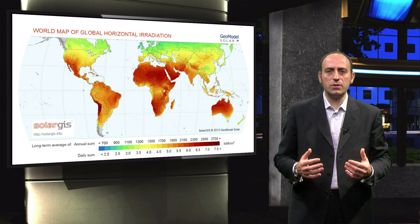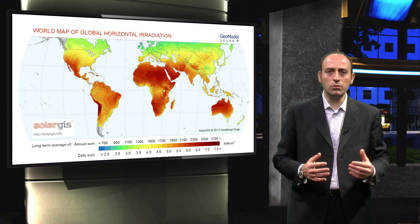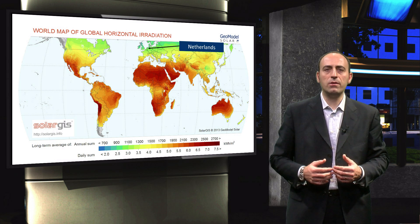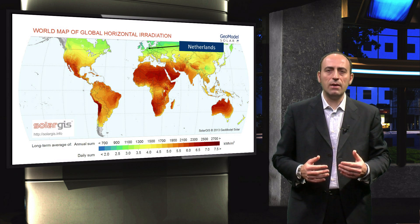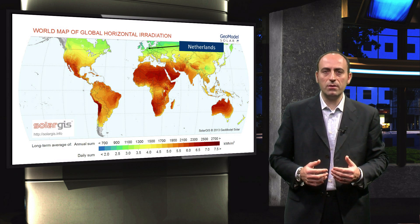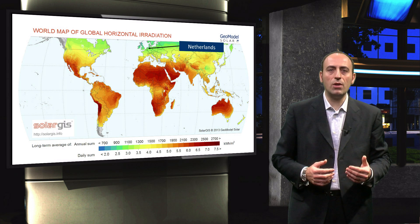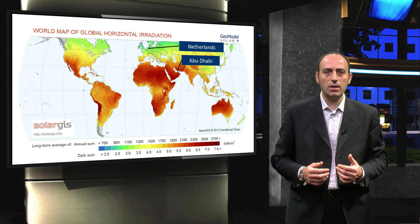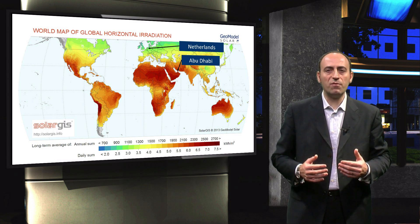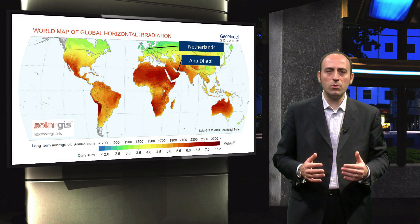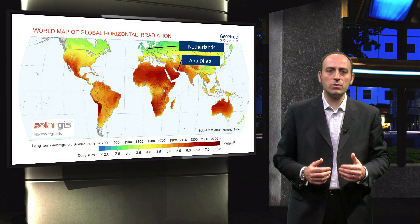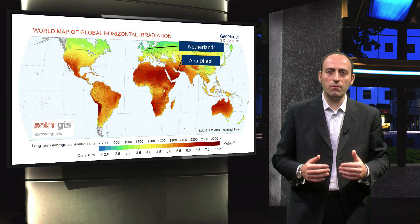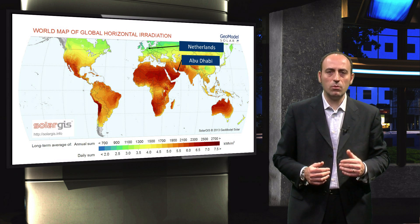So, if we want to produce the same amount of energy for two different PV systems — one in the Netherlands, where the radiation is almost 1100 kWh per square meter, and one in Abu Dhabi, where we have almost 2200 kWh per square meter — then the number of PV modules in the Netherlands should be almost double the PV modules in Abu Dhabi. It is therefore very important to look into the environment in which the PV system will be installed.